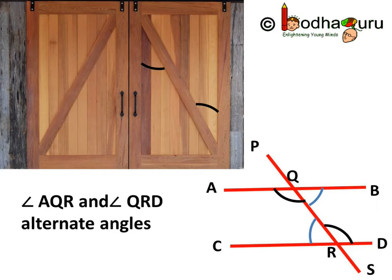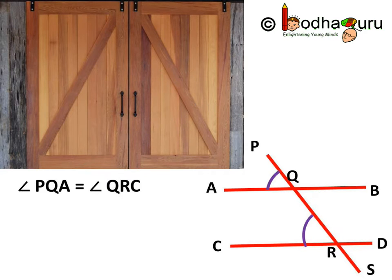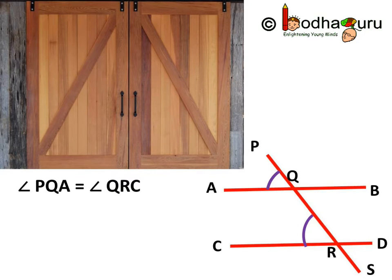Angle AQR and angle QRD are also alternate angles. Angle PQA and angle QRC are corresponding angles, as these two angles are at the matching top-left corners of each intersection.